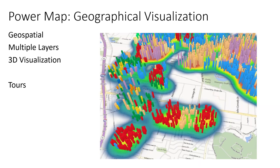Power Map is the geographical visualization component of Power BI. It provides 3D geographical visualization with different layers — for example, a layer showing column bar heights and another showing a heat map. You can create stories and tours through video scenarios built in Power Map, and it's available as part of Excel.